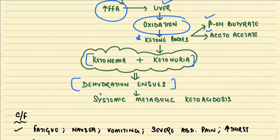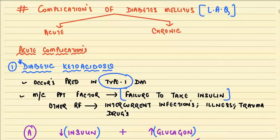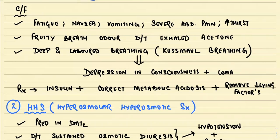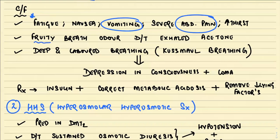Dehydration then ensues, leading to systemic metabolic ketoacidosis. The clinical features of diabetic ketoacidosis include fatigue, nausea, vomiting with severe abdominal pain, and increased thirst. There is a fruity breath odor because of exhaled acetone. Breathing is deep and labored — classically called Kussmaul's type of breathing. This leads to depression in consciousness leading to coma.